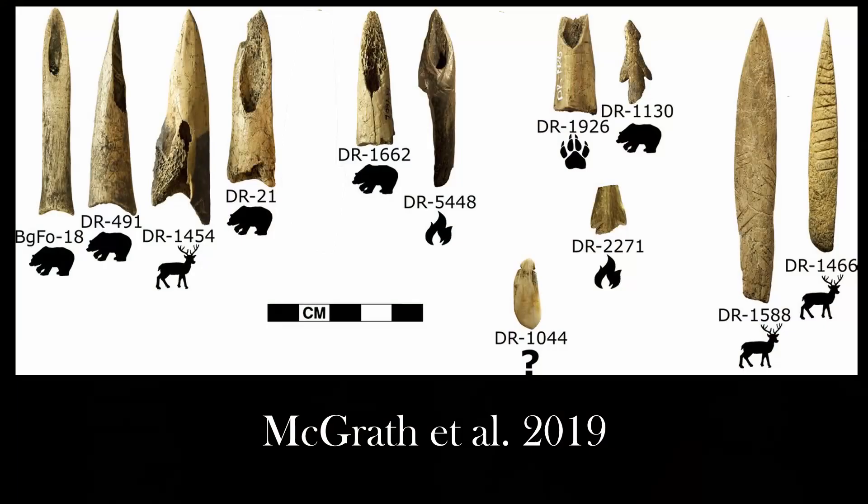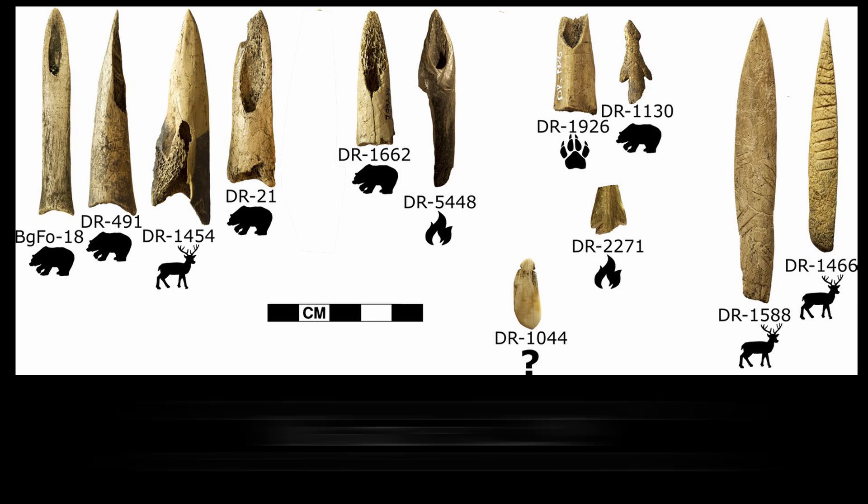There was a study by a woman named Kristin McGrath and a bunch of her colleagues on a collection of Iroquoian bone projectile points. They were similarly all assumed to have been made out of deer or elk. But when they did the ZooMS on them, what they found was that some of them were made of bear, some from all kinds of other animals, and some of them were actually human.